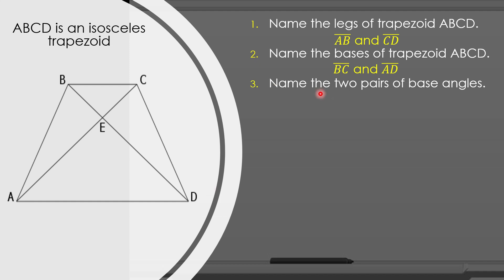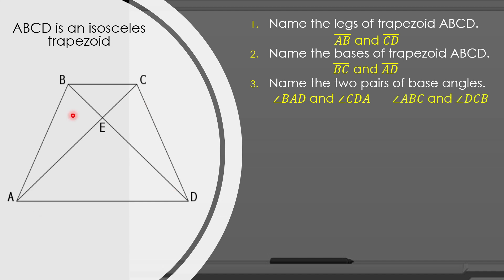Third, let us name the two pairs of base angles. For the lower base angles, we have angle BAD and angle CDA. For the upper base angles, we have angle ABC and angle BCD. And these are the pairs of base angles.